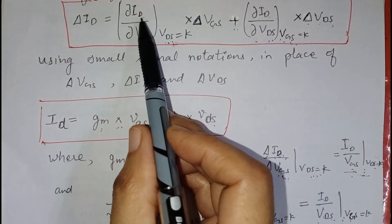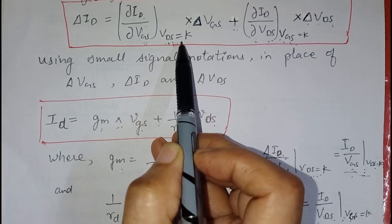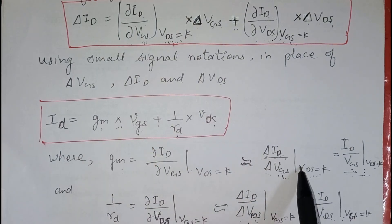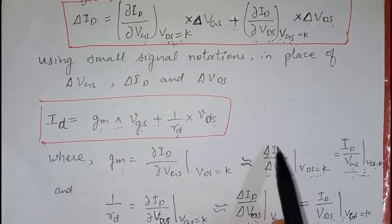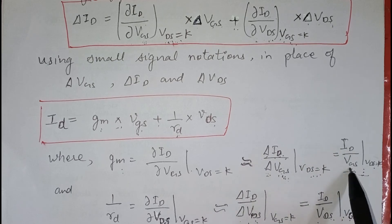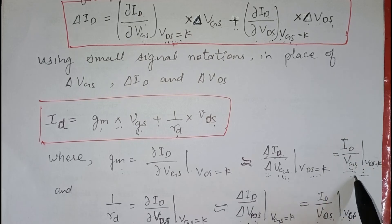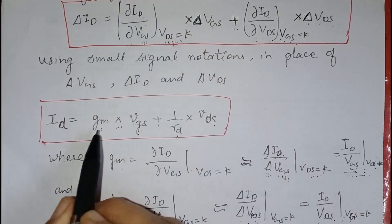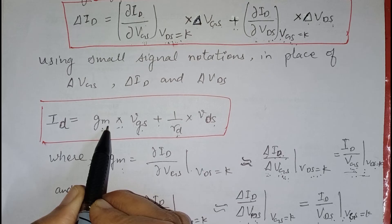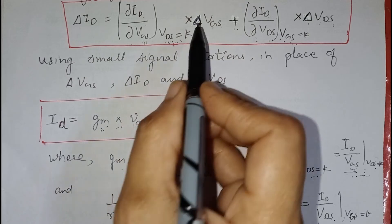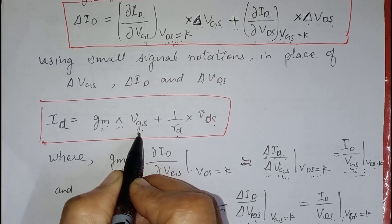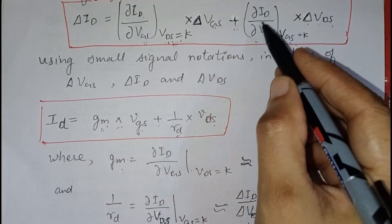The first term, del ID / del VGS at a constant value of VDS, is approximately equal to the change in ID upon change in VGS, which equals ID/VGS. This is the transconductance — the mutual transconductance — and this term can be replaced by gm. The delta VGS is replaced by the small signal notation vgs.